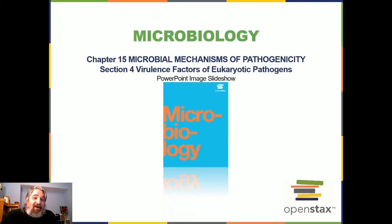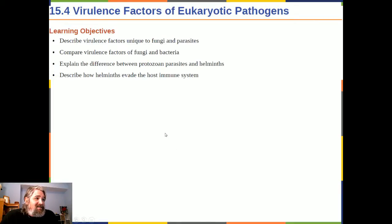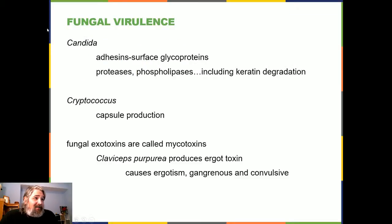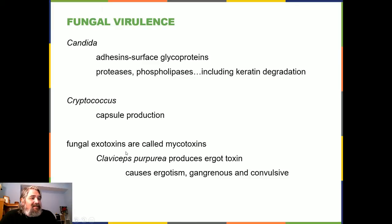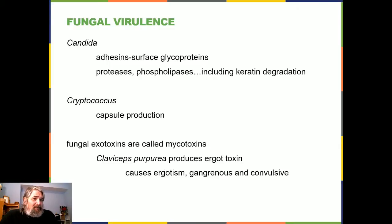Section 4: Virulence factors of eukaryotic pathogens. Learning objectives include virulence factors unique to fungi and parasites, comparing fungal and bacterial virulence factors, and distinguishing protozoan parasites from helminths. Fungal virulence factors: in Candida, there are adhesins (surface glycoproteins), proteases, and phospholipases including keratin degradation. Cryptococcus has capsule production. Fungal exotoxins are called mycotoxins — for example, Claviceps purpurea produces ergotoxin, causing ergotism in both gangrenous and convulsive forms.